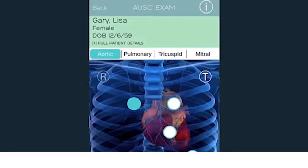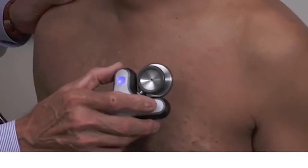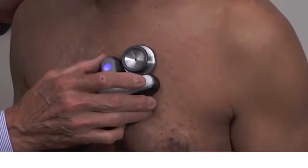Once auscultation is selected in the app, a chest illustration displays the heart valve locations for proper placement. The Cardio Sleeve is properly placed on a specific valve location.